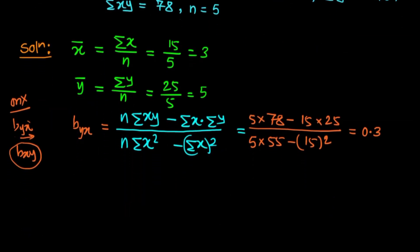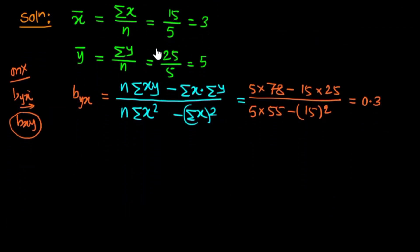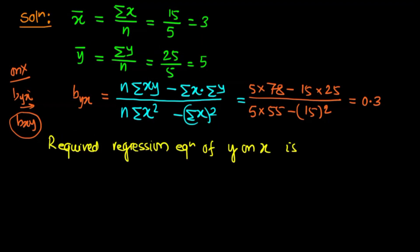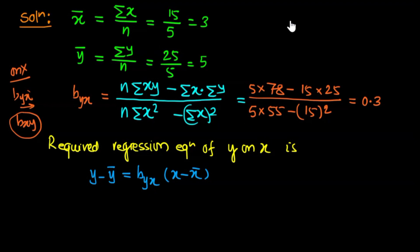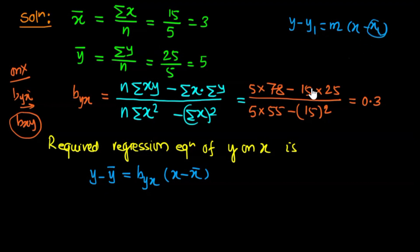Now the required regression equation of y on x. The formula is: y minus y bar equals b_yx times bracket x minus x bar. This is similar to the straight line formula: y minus y one equals slope times x minus x one, where y bar corresponds to y one and x bar corresponds to x one, and the slope is the regression coefficient b_yx.